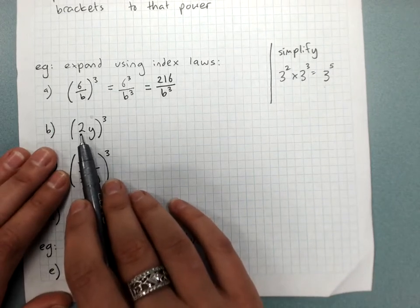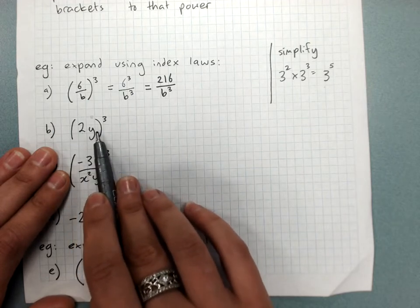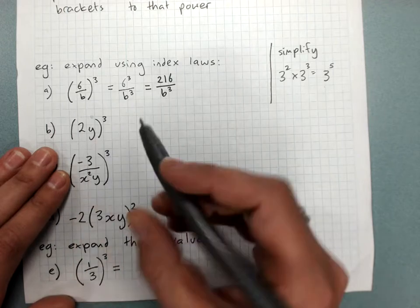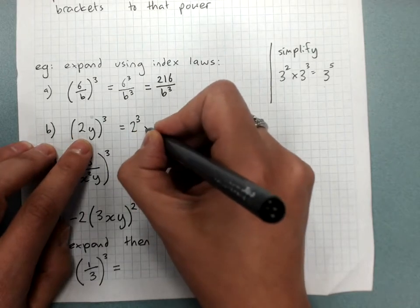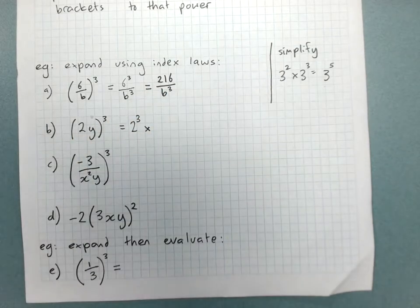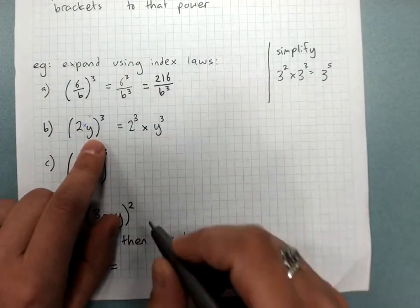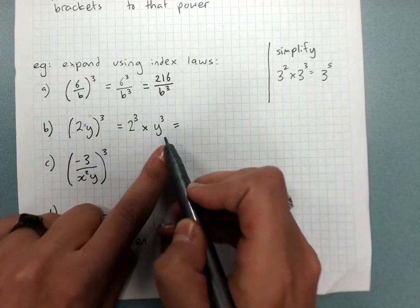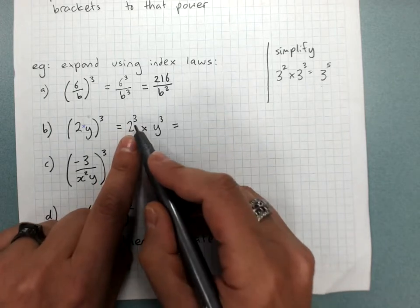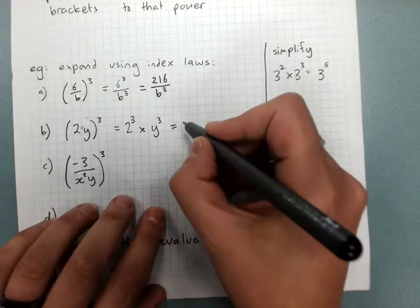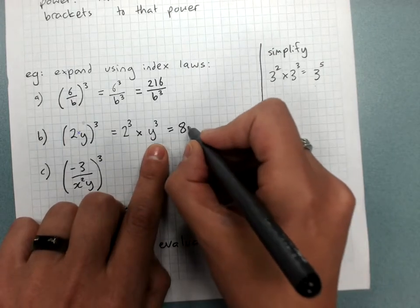Index law 4 says: if I've got a product to a power, I do both parts to the power. So (2y) cubed means 2 cubed times y cubed. Then using the rule that when there are letters and numbers in the answer we evaluate the number part: 2 cubed is 2 times 2 times 2, which is 8. We don't need the times sign now, so the answer is 8y cubed.